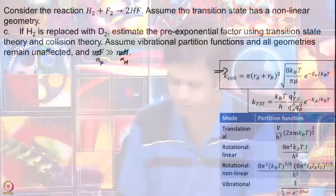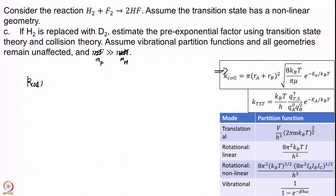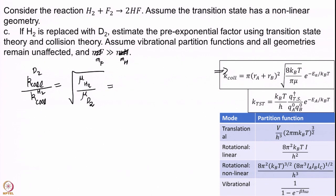We will first start with collision theory — that one is actually easy. Looking at K_collision(D2) / K_collision(H2): all geometry factors are the same, so R_A and R_B cancel. kT cancels, π cancels. The only thing left is the square root of μ(H2)/μ(D2). The rate constant is inversely proportional to μ, so K(D2)/K(H2) = √(μ_H2/μ_D2). The mass of deuterium is double that of hydrogen, so the reduced mass is also double, giving √(1/2).